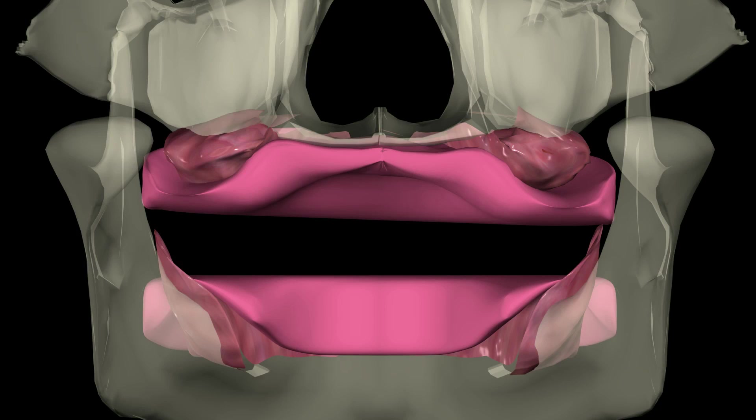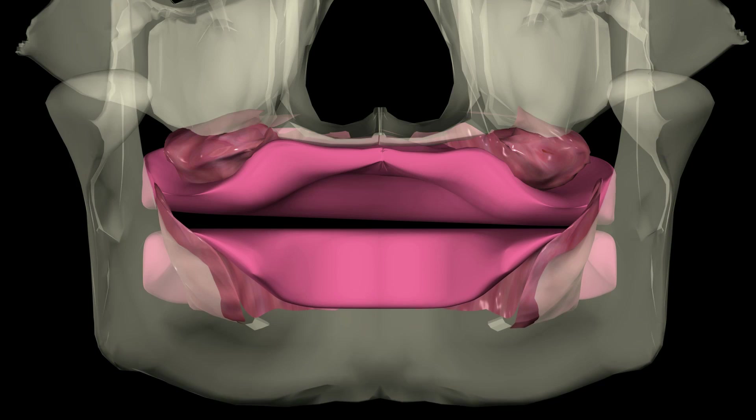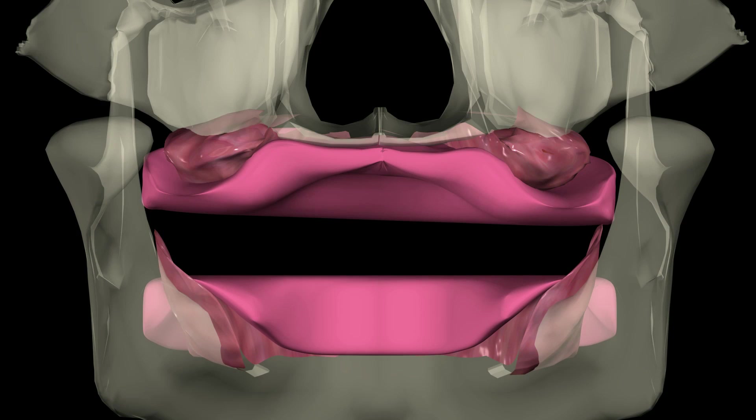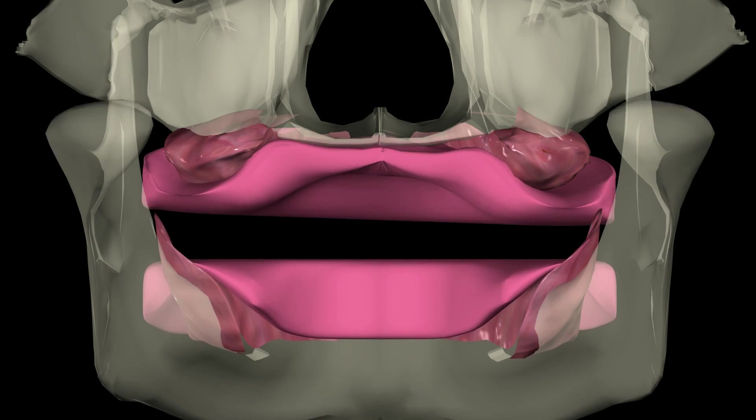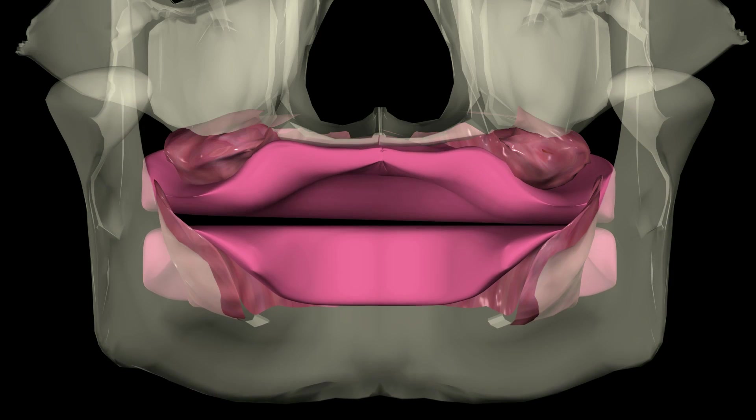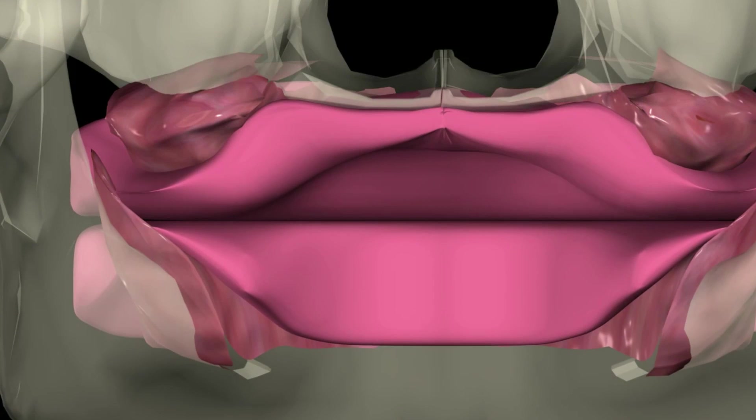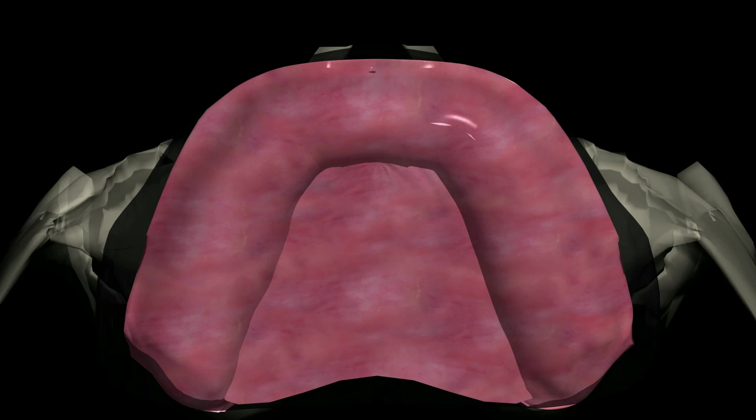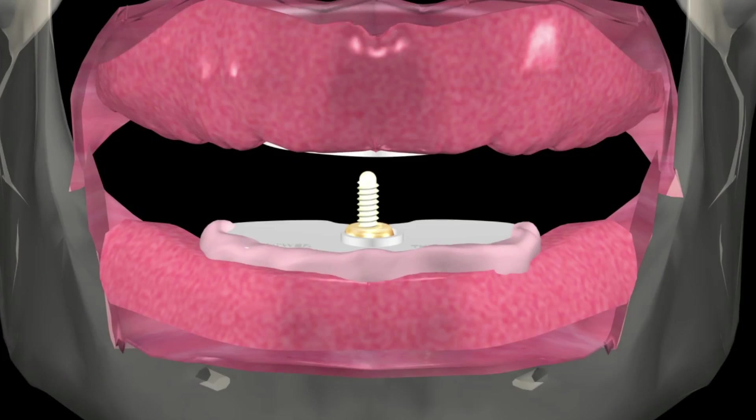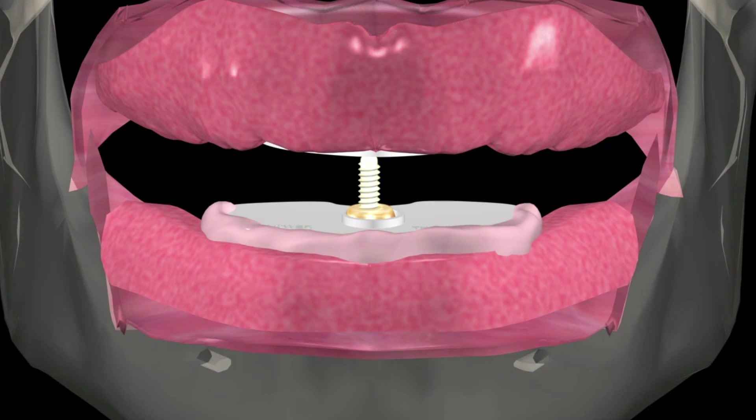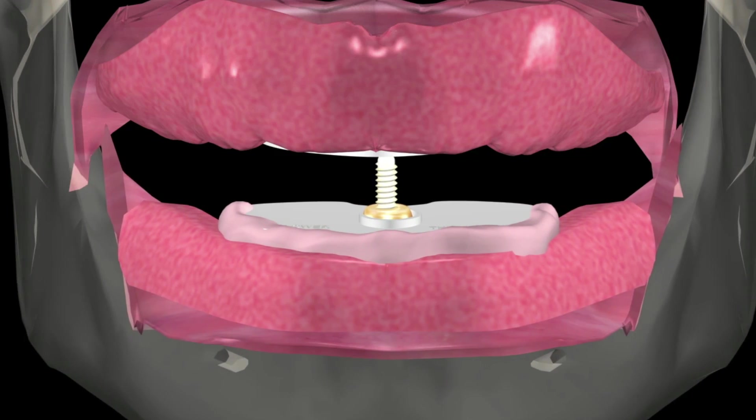The alternative to the Mossad jaw recorder for occlusal registration is to use opposing wax rims. The problem with this traditional approach is well known, as it is very difficult to bring the two wax rims together simultaneously without interference from one side. This will result in rocking of the rim and an inaccurate occlusal registration. The Mossad jaw recorder completely eliminates the inaccurate rotational movement.